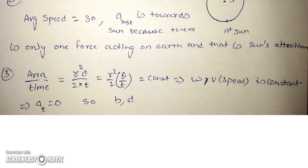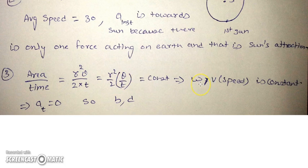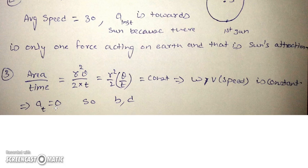Let's talk about this mathematically. Area swept per unit time is (1/2)r²θ divided by t. So r²/2 is a constant, and θ/t is also constant because area per unit time is given as constant. So θ/t is nothing but angular speed. As angular speed remains constant, speed will also be constant and the magnitude of tangential acceleration will be 0 since speed is constant. So tangential acceleration remains 0 — hence constant — and speed is constant.